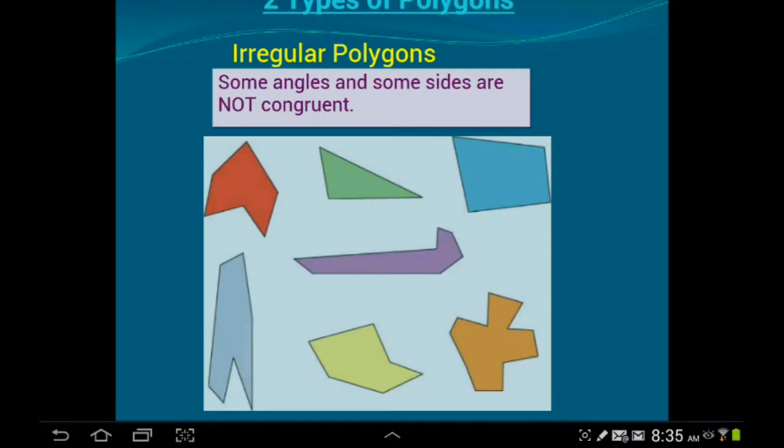Now, if it's an irregular polygon, some angles and some sides are not congruent. I put on there some, because sometimes you have a couple sides that are equal. Sometimes you have most of the sides equal, but all these pictures here are all examples of irregular polygons.